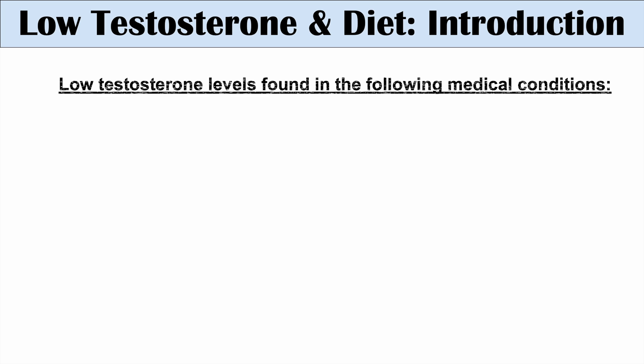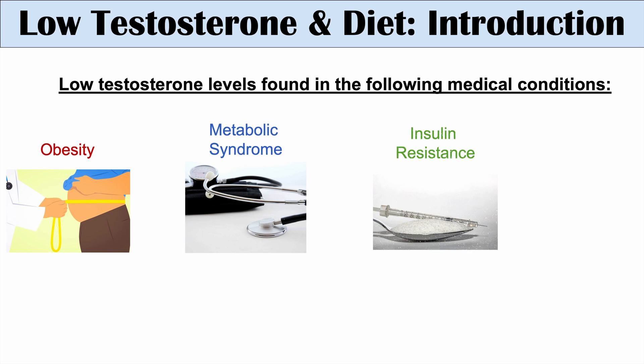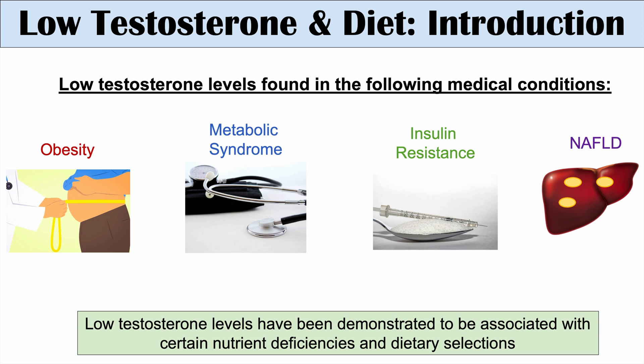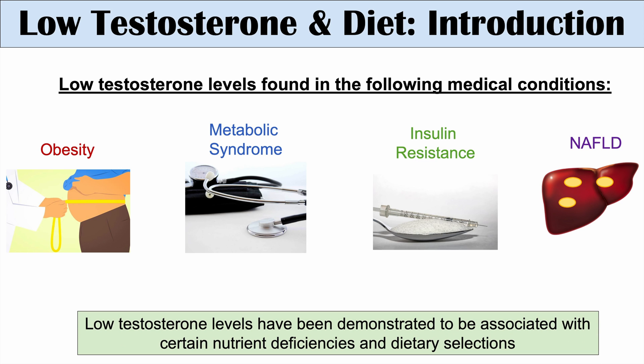Before we look into the different types of dietary selections, low testosterone levels have been found in the following medical conditions, including obesity, metabolic syndrome, insulin resistance, and non-alcoholic fatty liver disease. These medical conditions are oftentimes related to dietary influence as well, so we can see there's already a connection here. Low testosterone levels have also been demonstrated to be associated with certain nutrient deficiencies and dietary selections, which we'll cover in the next upcoming slides.